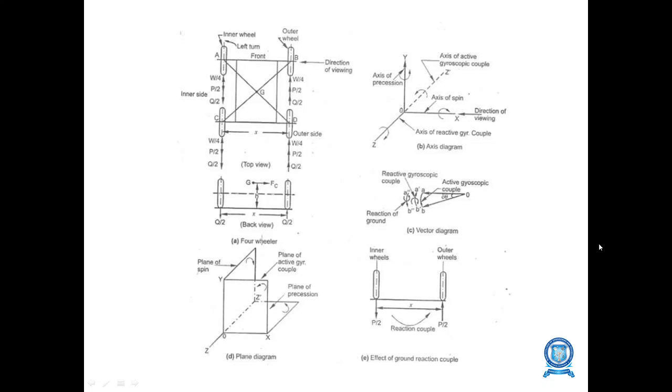This is the effect of ground reaction — the vector diagram for the four-wheeler showing the gyroscopic effect acting on it.